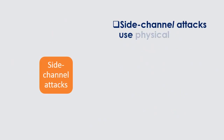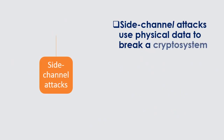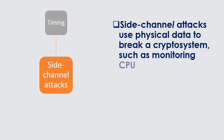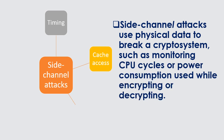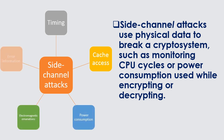Side-channel attacks use physical data to break a cryptosystem, such as monitoring CPU cycles or power consumption used while encrypting or decrypting. Side-channel attack artifacts include timing, cache access, power consumption, electromagnetic emanations, and error information.